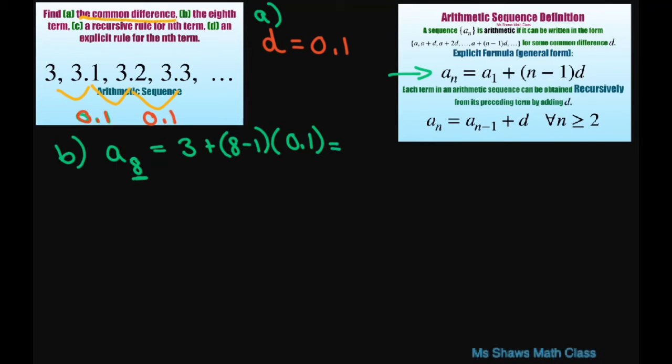Alright, so this is going to be 3 plus 7 times 0.1, which equals 3.7.